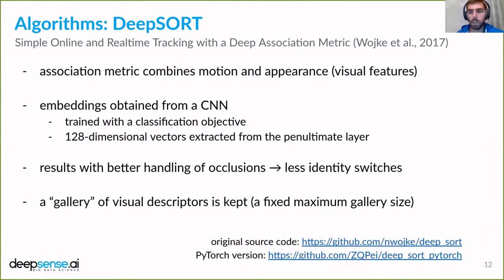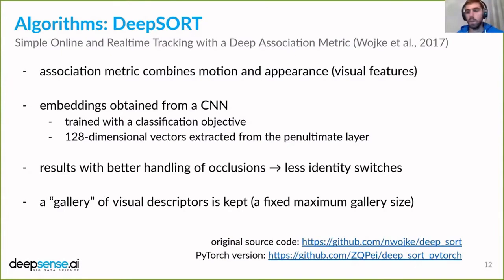Another concept introduced in DeepSORT was a gallery — a list of the history of embeddings for each track, kept for a fixed number of frames and then forgotten. When doing assignment, a nearest neighbor match is performed between the features kept in the gallery and those extracted from the new video frame.